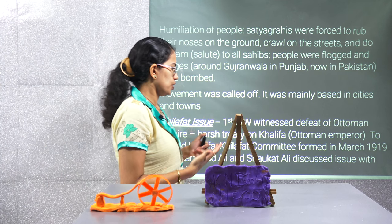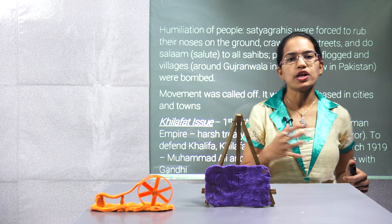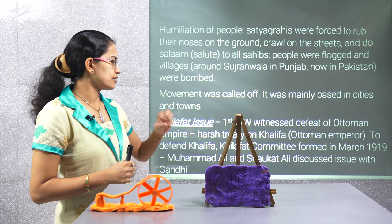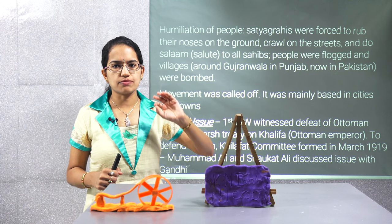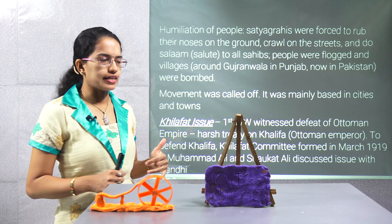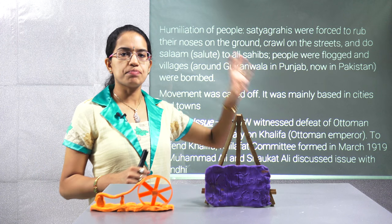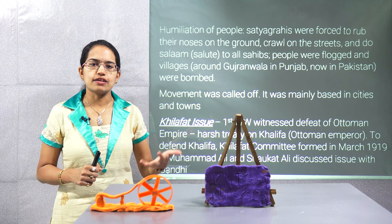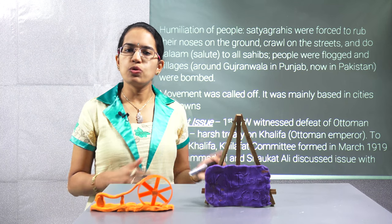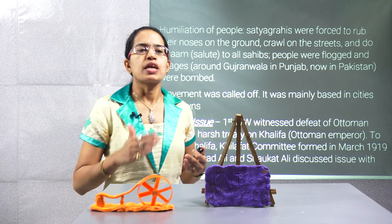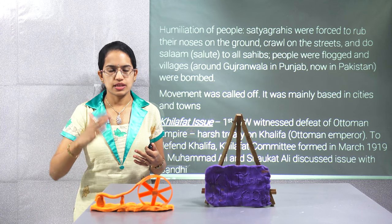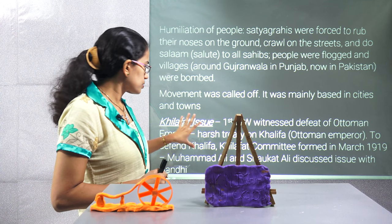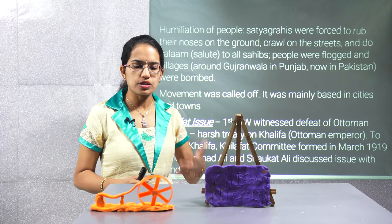Then came the Khilafat issue. During the First World War, the Ottoman Empire — basically Turkey at that time — was defeated, and the Khalifa did not have powers. There was a harsh treaty that had to be signed. Support for the Khalifa, the emperor of the Ottoman Kingdom, was starting in India, and that idea was led by Muhammad Ali and Shaukat Ali, who talked with Gandhiji. Gandhiji supported this, and a non-cooperation movement combined with Khilafat was the basic idea that emerged.